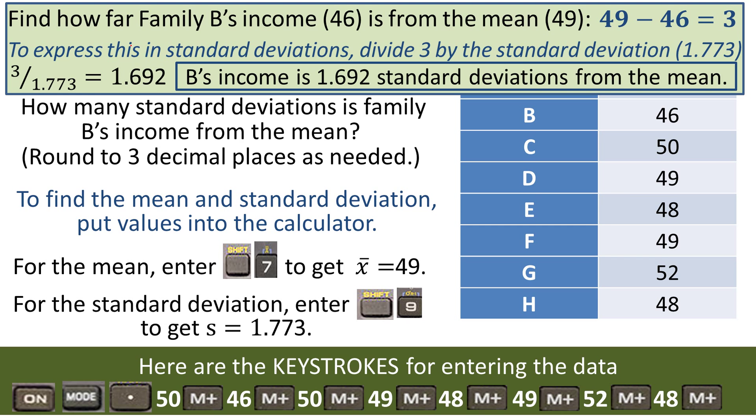Family B's income is 1.692 standard deviations from the mean. The difference of family B's income from the mean is a little over one and a half standard deviations.